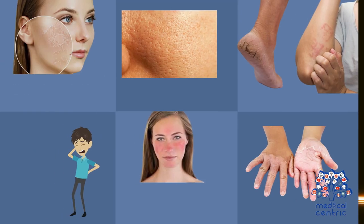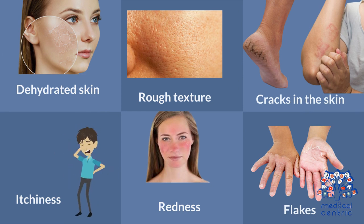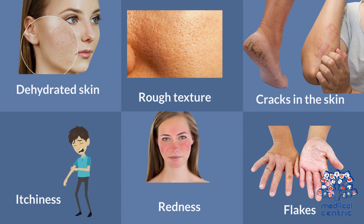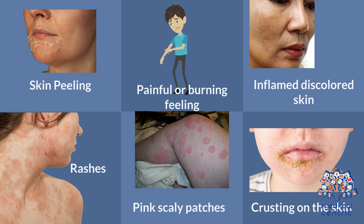What are the symptoms of ashy skin? Dehydrated skin, rough texture, cracks in the skin, elbows and feet as highlights, itchiness, redness, flakes, skin peeling, painful or burning feeling, inflamed discolored skin, rashes, pink scaly patches, and crusting on the skin.